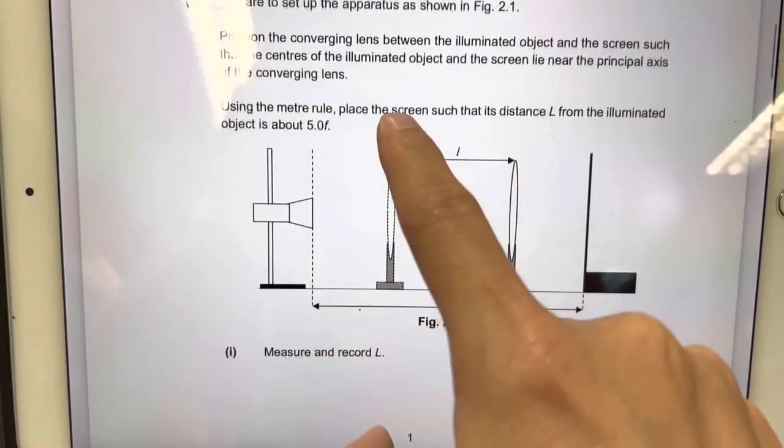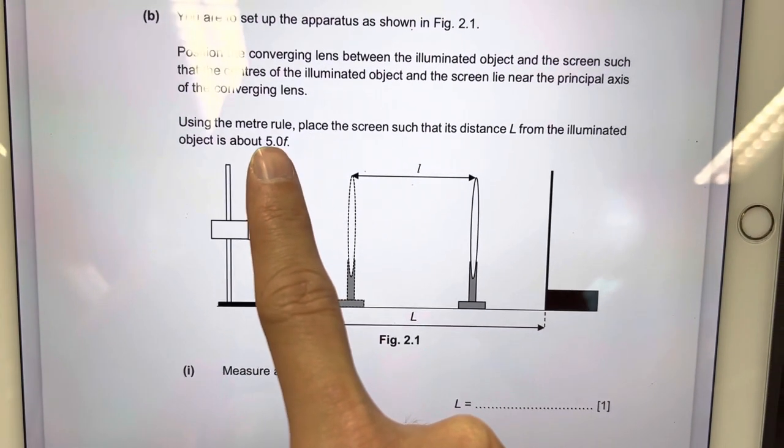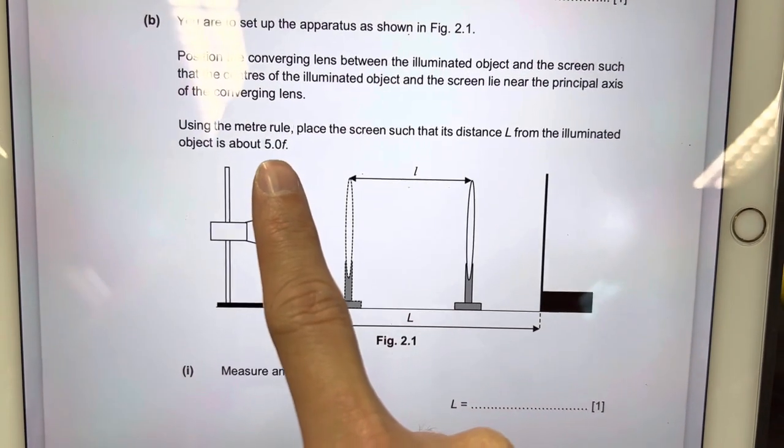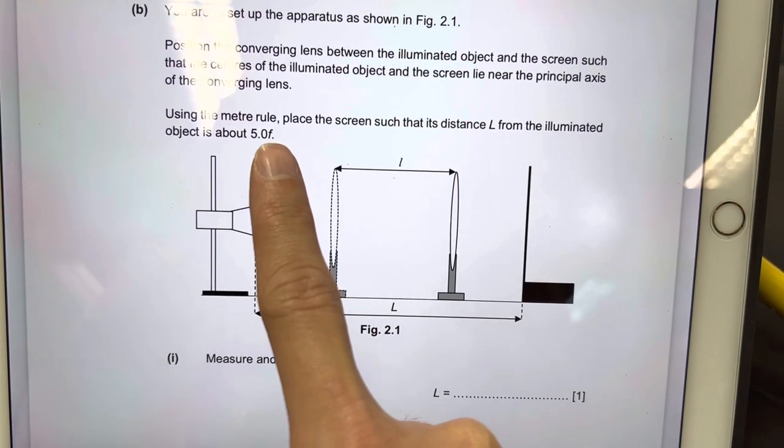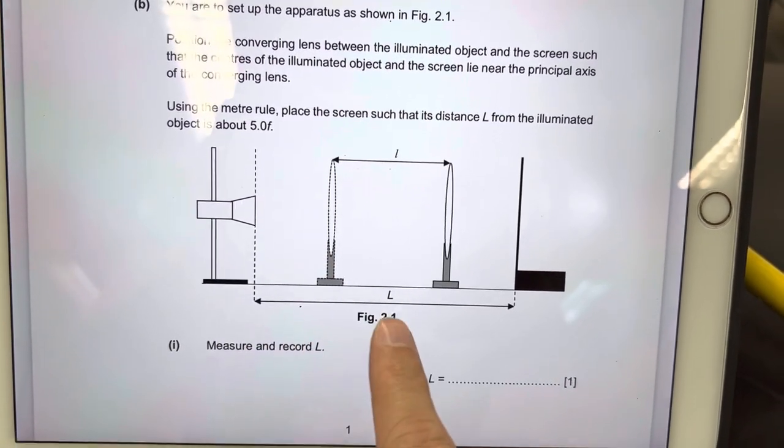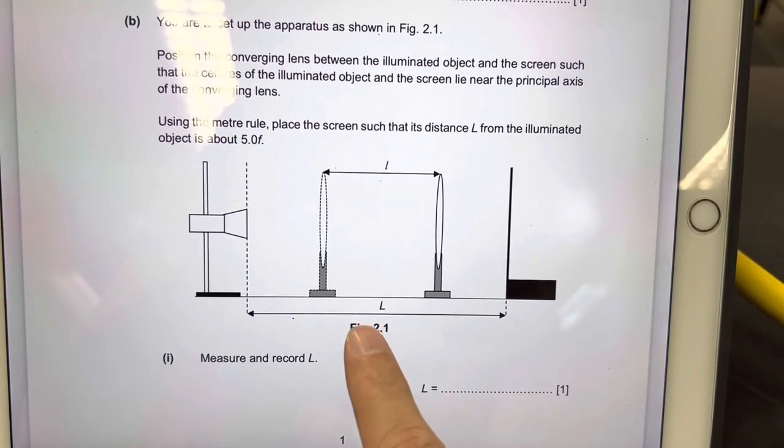And down here, you will then know that this will be 5 times f which is 14.5 for my case. So now you will know how to find it.